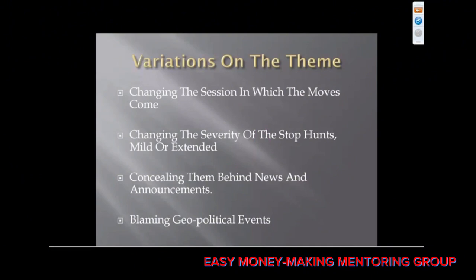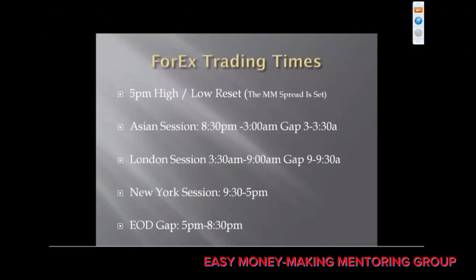Forex trading times — you can actually write them down. At 5 p.m., highs and lows reset. The market maker spread is set immediately at the open, right around 5:15 to 5:30 — that's when he starts his business. The Asian session runs 8:30 to 3 a.m. I left the gap time off: from 5 to 8 p.m. is the dead gap.